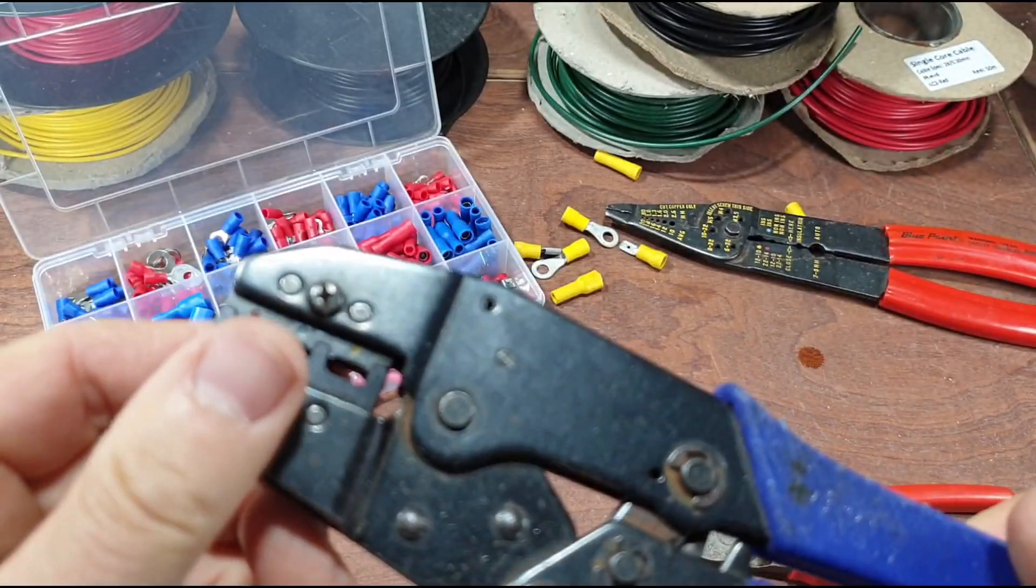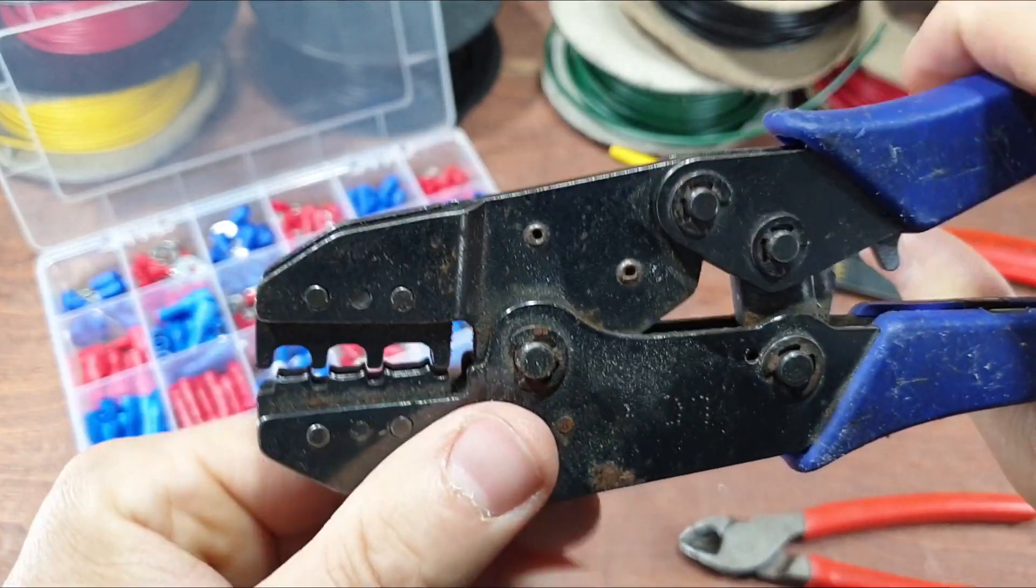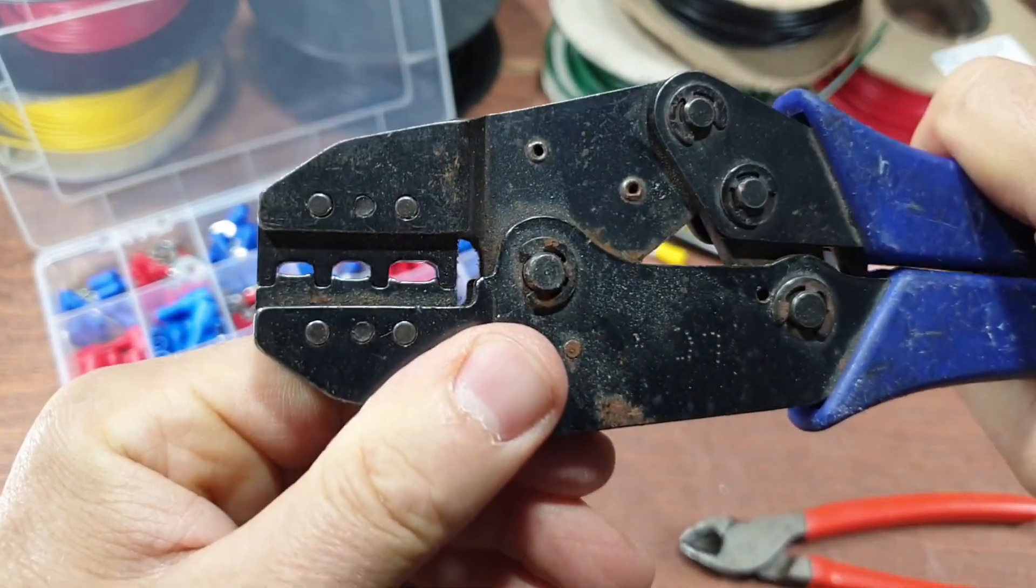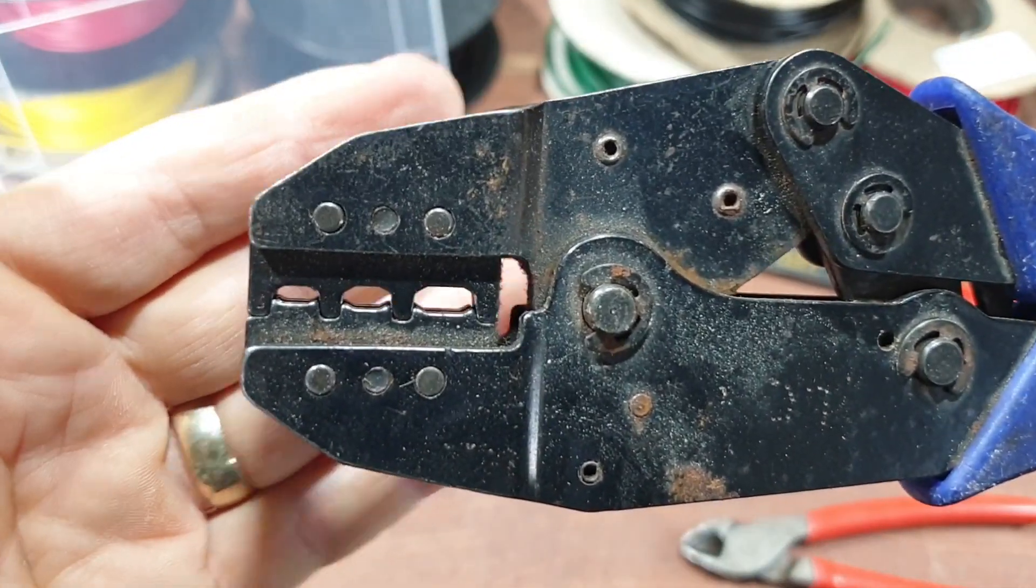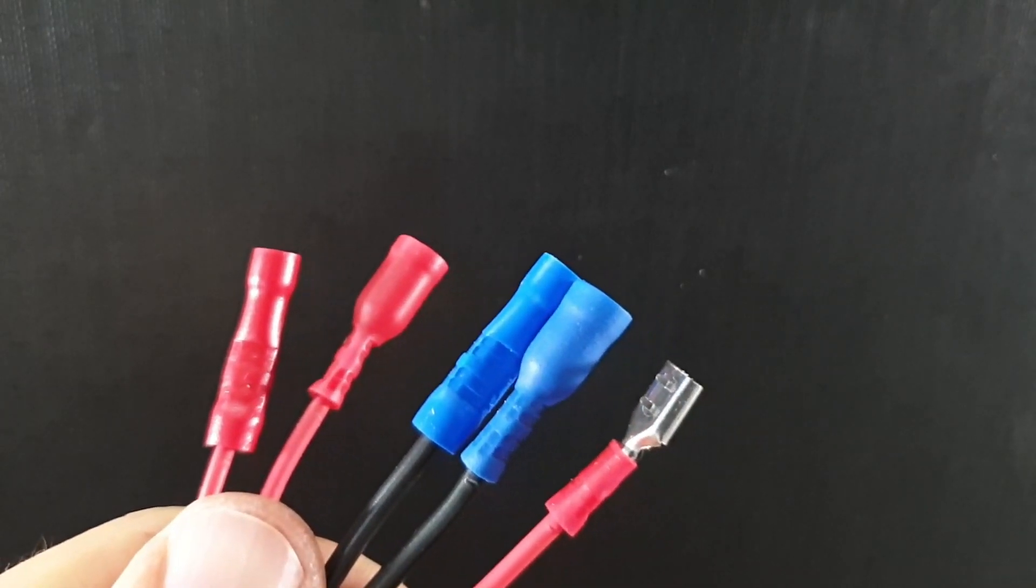Best way: set of ratchet crimpers. These will only take it down so far, so it's a fairly repetitive and consistent crimp. But obviously if you've only got one wire to crimp, you're not going to go out and buy a set of these.